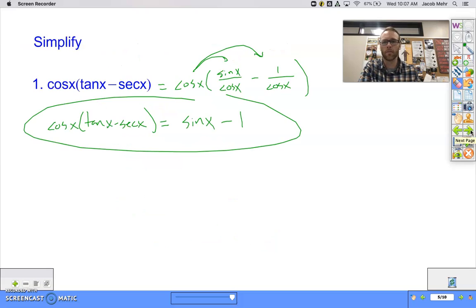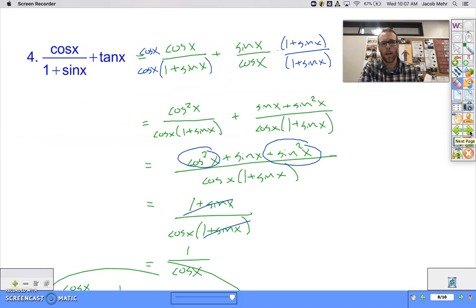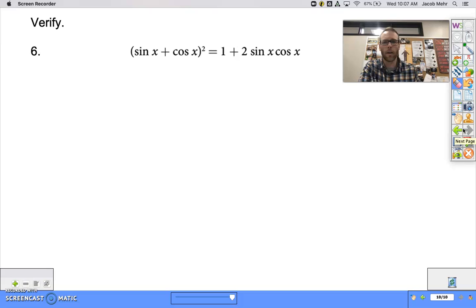What we have worked on a lot yesterday was simplifying trig expressions. And in my opinion the verifying of identities can actually be easier than simplifying because we know what we're supposed to get, right?